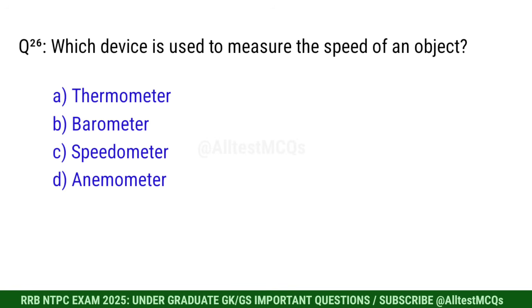Q26. Which device is used to measure the speed of an object? Right option is C. Speedometer.